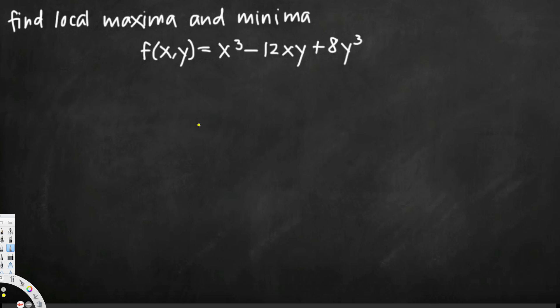In this video we are going to see how to find the local minimum and local maximum for a multivariable function. If you remember, when we have a single variable function, to find local maximum and minimum we use the second derivative test. Here we are going to do the same thing — we are going to take partial derivatives, the second partial derivative, and then determine whether we have a local minimum or local maximum.